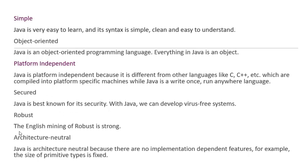Robust — the English meaning of robust is strong. Java is a strong language. There is no entry and exit point without the permission of Java. That means nobody can enter into the Java system, and there is no unauthorized exit point available in Java. Therefore, Java is a robust application.